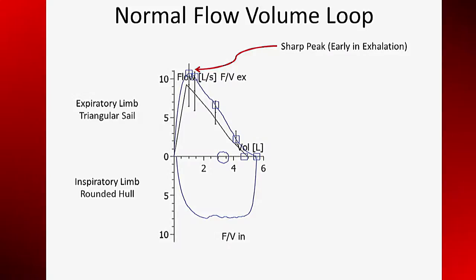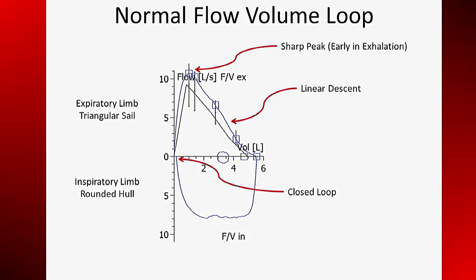A good effort will have a sharp peak, while submaximal efforts will have a blunted peak. The descent of the expiratory limb is nearly linear, and this shape and deviations from it will become important when we discuss obstruction and restriction. The inspiratory limb creates the rounded hull below the waterline. The peak in inspiratory flow is at mid-inspiration. A well-performed maneuver without leaks should close the loop.